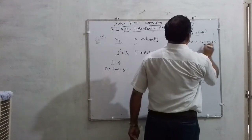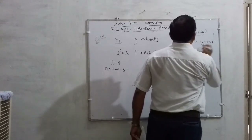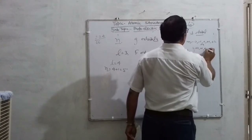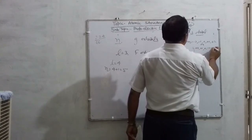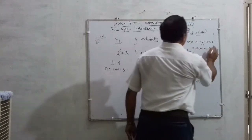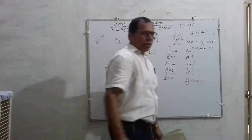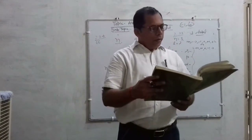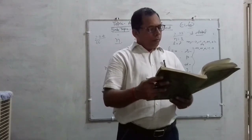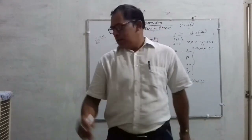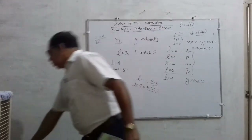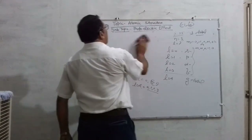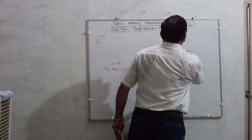In other words, you can also write it as plus 2, plus 1, 0, minus 1, and minus 2. This will be the answer. The next question is question number 2.26.